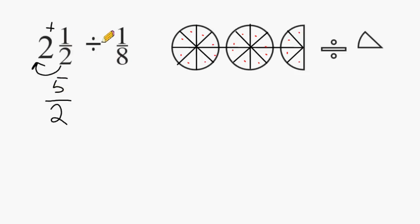And whenever you are dividing by a fraction, you must multiply by its reciprocal. So we change the division sign to multiplication, and we write the reciprocal of 1 eighth, which is 8 over 1.